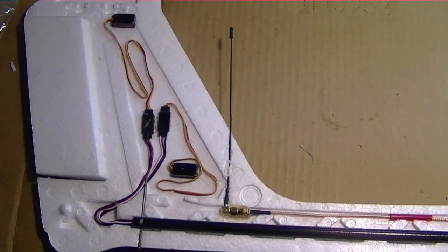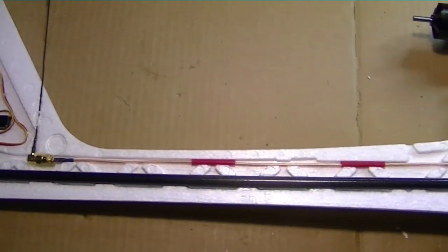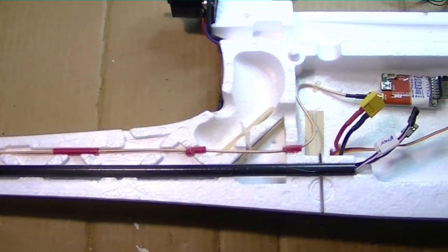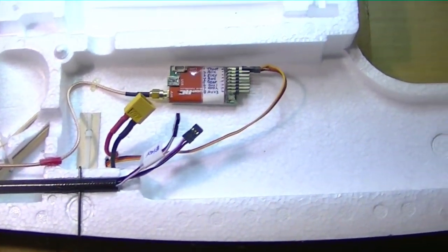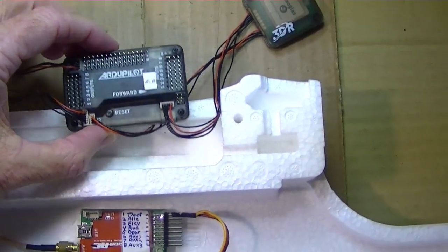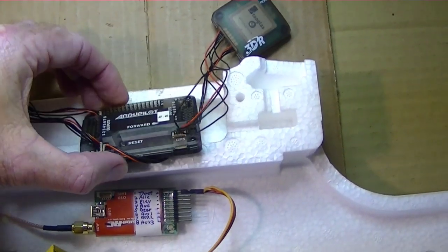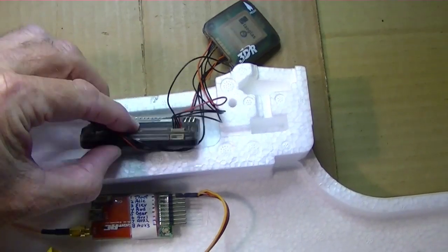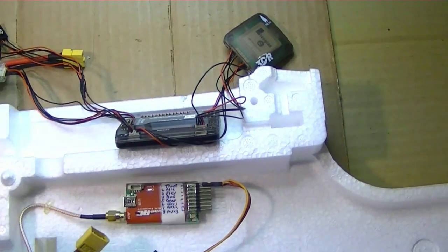So now that the LRS, or long range control system, is installed in the Skywalker plane, we're going to move on to the next video where we're going to be installing the ArduPilot Mega 2.6 and testing the functionality of that. So stay tuned and see you next time.